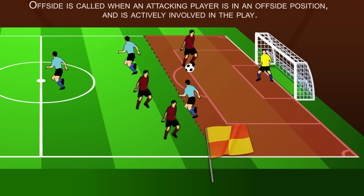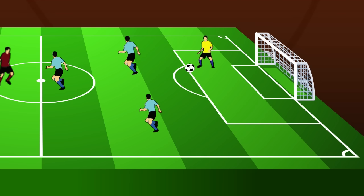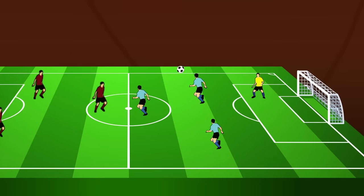So if the ball is played to him now, the referee stops play and awards a free kick to the defending team for the position of the foul.